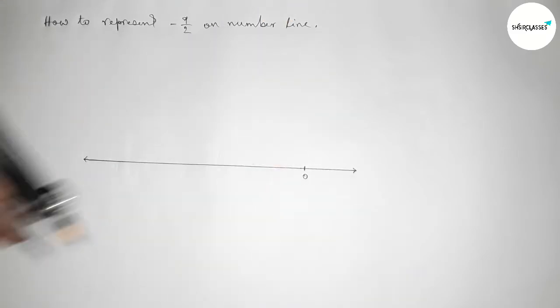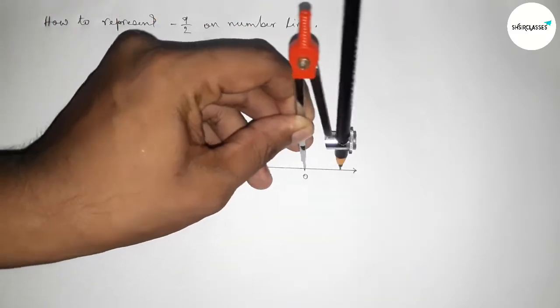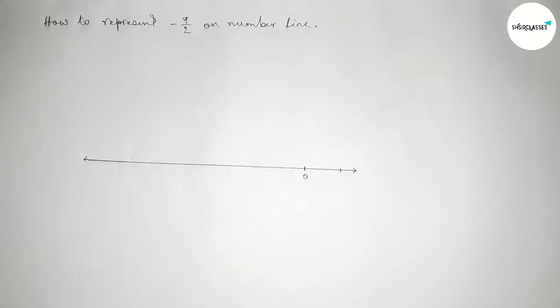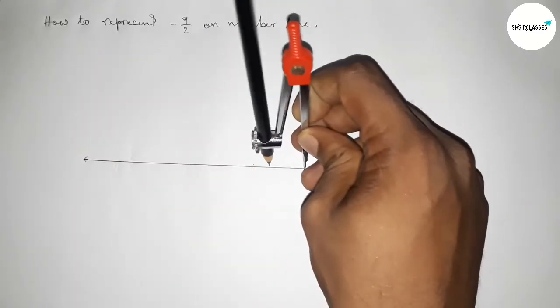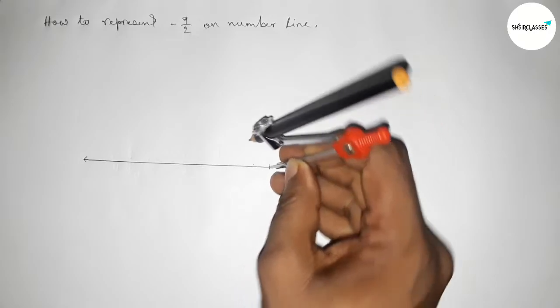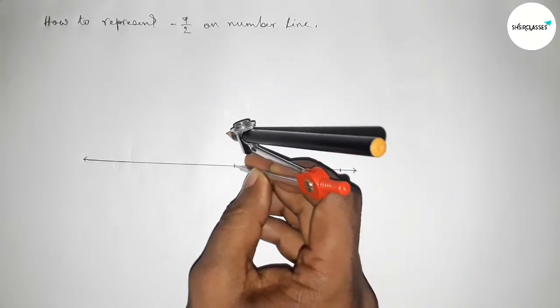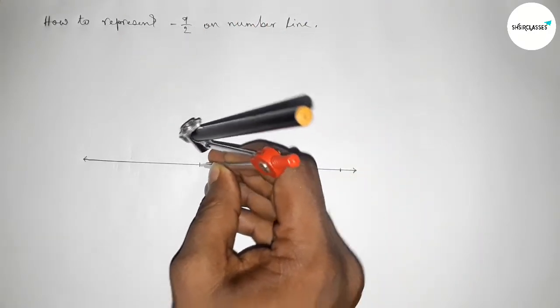By this way, putting the compass on the point zero here and cut here, and putting the compass here and cut here. So first we have to mark the numbers on the line by this way, then we can get a number line.